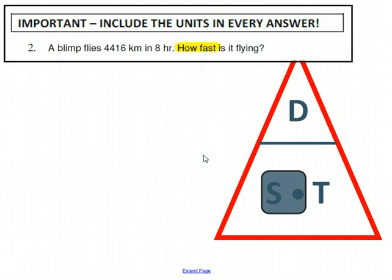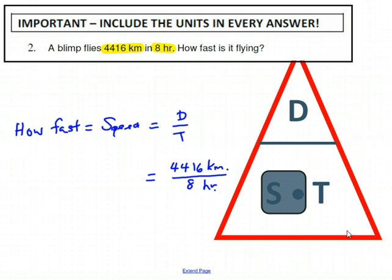Being asked how fast, I cover up S. I've got distance divided by time, and I plug in the distance and time information that I'm given, and I'm going to end up with units in kilometers per hour, which is a speed unit. The calculator tells me that that divides out to be 552 kilometers per hour. That's the end of the video.